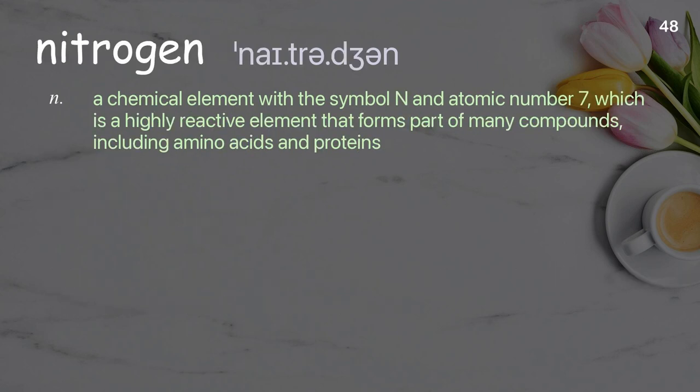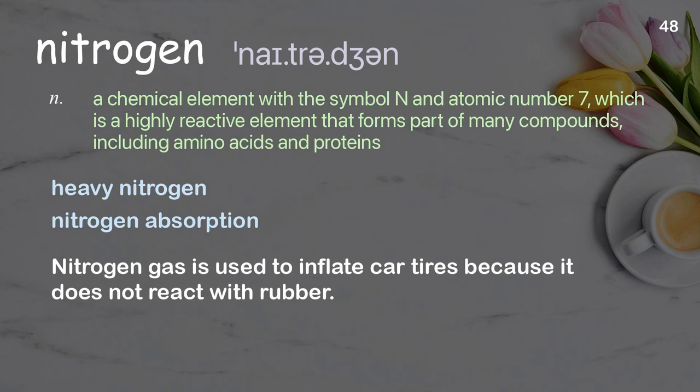Nitrogen: a chemical element with the symbol N and atomic number 7, which is a highly reactive element that forms part of many compounds, including amino acids and proteins. Examples: heavy nitrogen, nitrogen absorption. Nitrogen gas is used to inflate car tires because it does not react with rubber.